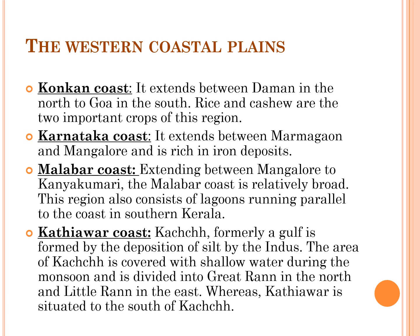The Konkan coast extends between Daman in the north and Goa in the south. Rice and cashew are important crops grown here. The Kannada or Karnataka coast extends between Marmagao and Mangaluru, and it is rich in iron deposits. The Malabar coast extends between Mangaluru and Kanyakumari and is relatively broader compared to the Konkan and Karnataka coasts. This region consists of lagoons running parallel to the coast in southern Kerala. The Kathiawar coast — Kutch, formerly a gulf, was formed by deposition of silt by the Indus. The area of Kutch is covered with shallow water during the monsoon and is divided into the Great Rann in the north and Little Rann in the east. Kathiawar is situated to the south of Kutch.